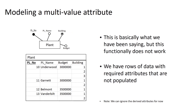As far as multi-value attributes go, this is kind of what we've been saying in the naive model we created previously, where we have our multi-value attribute of building. We're saying that we have a plant that has a plant number, a plant name, a budget, and then three buildings: building one, building two, and building three.